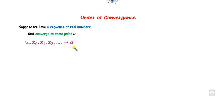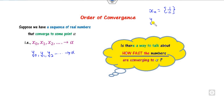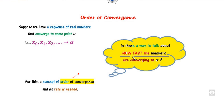The question arises: how fast does this sequence converge to alpha? For example, if I have the sequence 1/n and another sequence 1/n², you can see both sequences converge to 0. But how fast does each sequence converge to 0? To measure how fast sequences converge to the desired limit, we need the concept of order of convergence.